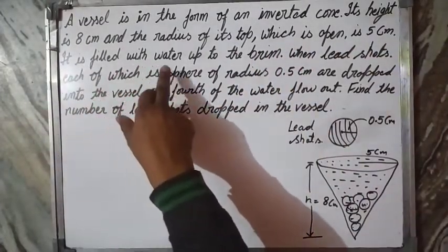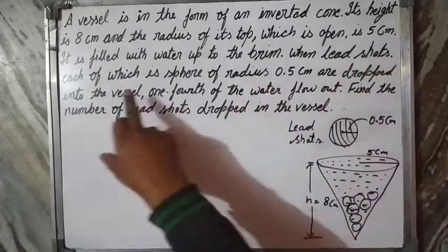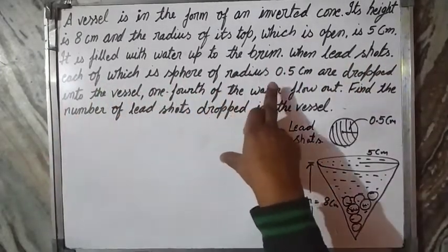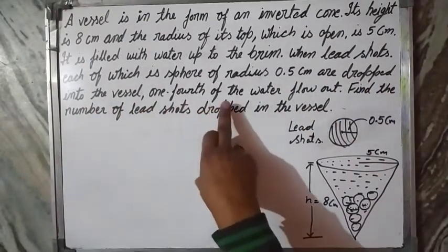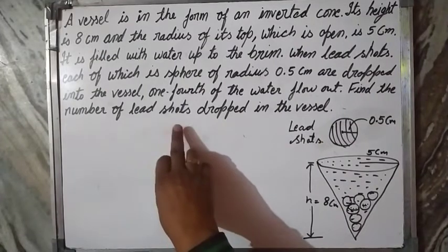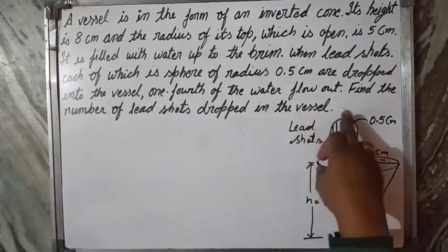It is filled with water up to the brim. When lead shots, each of which is a sphere of radius 0.5 cm, are dropped into the vessel, one-fourth of the water flows out. Find the number of lead shots dropped into the vessel.